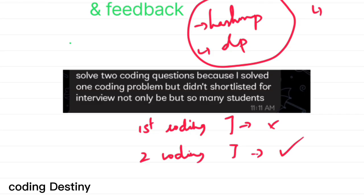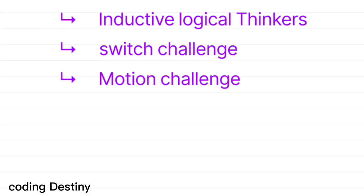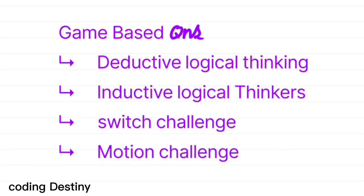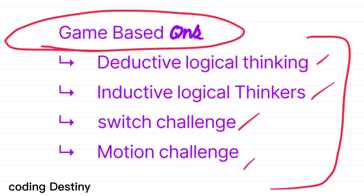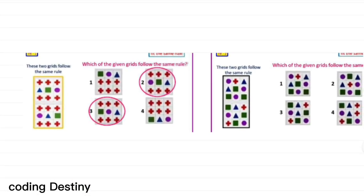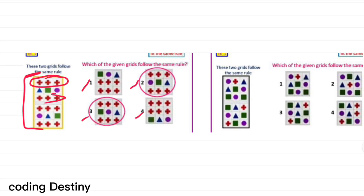For the game-based questions, there are four types in Capgemini: detective logical thinking, inductive logical thinking, switch challenge, and motion challenge. For the inductive logical thinking type, you need to check whether two diagrams follow the same pattern — for example, if a plus sign appears above and below in one diagram, the same pattern should follow in other options. You select the options that match. For the switch challenge, positions such as one, two, three, four are rearranged and you need to identify the correct mapping.